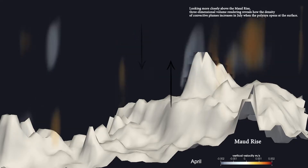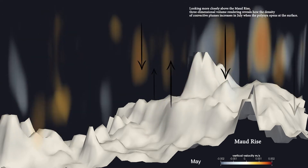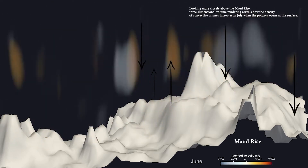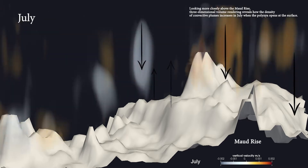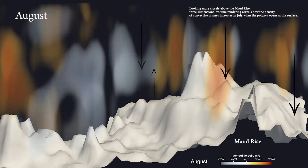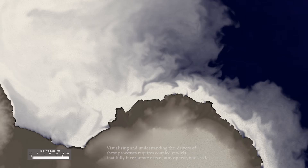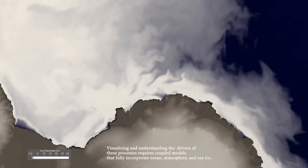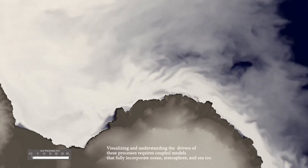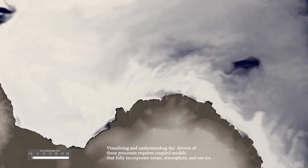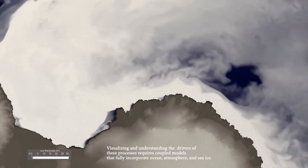Looking more closely above the Maud Rise, three-dimensional volume rendering reveals how the density of convective plumes increases in July when the polinia opens at the surface. Visualizing and understanding the drivers of these processes requires coupled models that fully incorporate ocean, atmosphere, and sea ice.